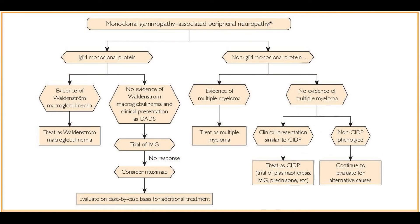Unfortunately, for IgM-associated neuropathy there is not a definitive treatment at this time. There have been many trials involving different treatments, and none have shown a great response. The most promising has been rituximab, which has shown some improvement in some patients. A randomized double-blind study, although it didn't meet its primary endpoint, did meet a secondary endpoint showing improvement in neuropathy disability. Some individual case series have also shown some patients respond to IVIG.